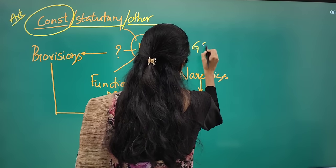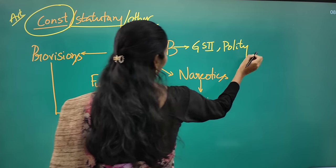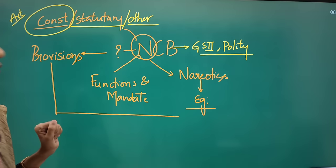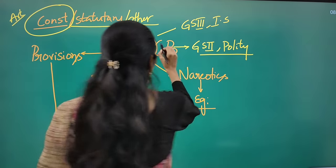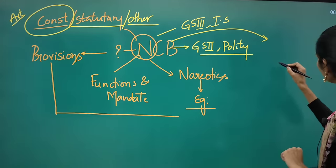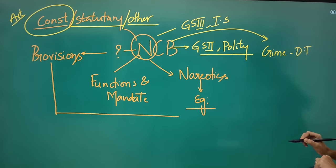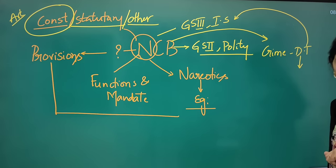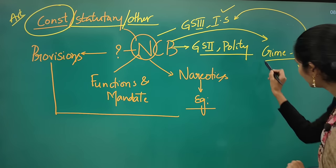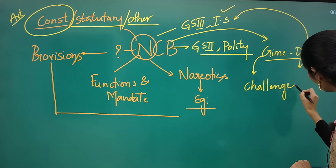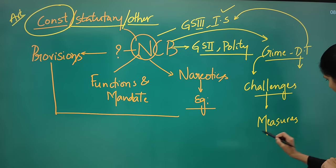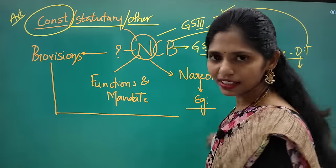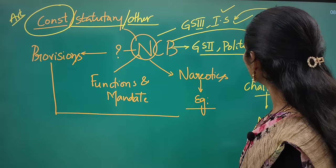This topic is important from GS Paper 2 under polity. But we can also connect it with GS Paper 3 from an internal security point of view. The NCB deals with crime related to drug trafficking, which is one internal issue of a country. From an internal security perspective, you have to think about what are the challenges faced by the NCB and what measures can be taken to address those challenges.